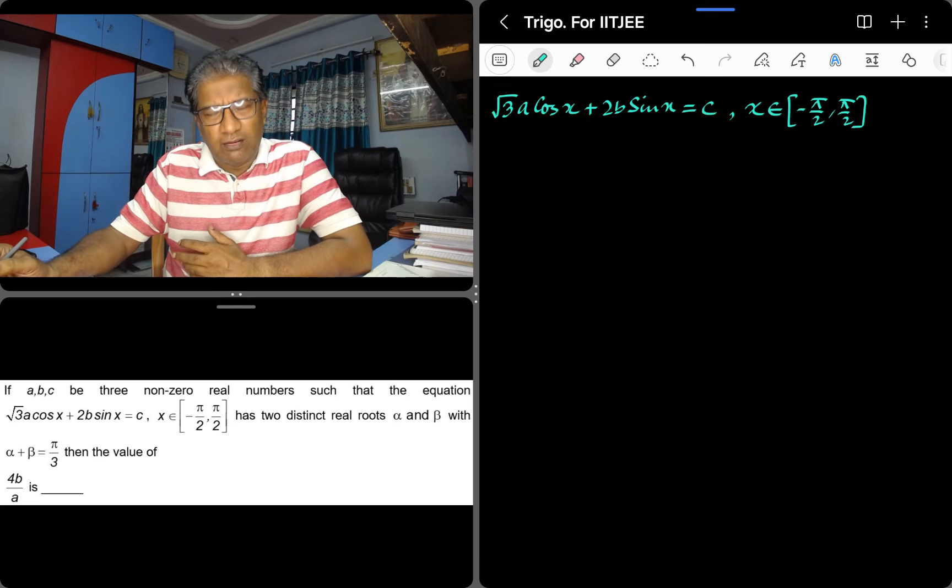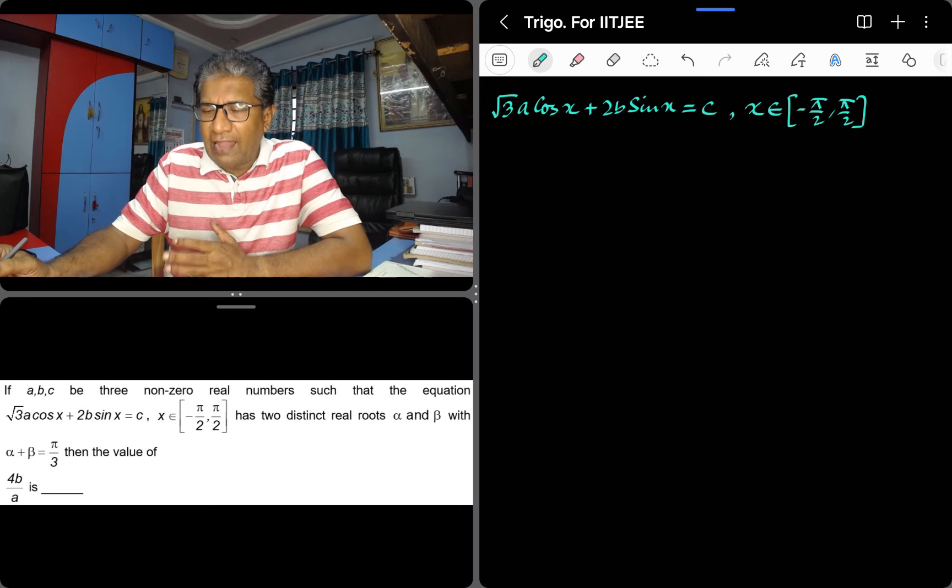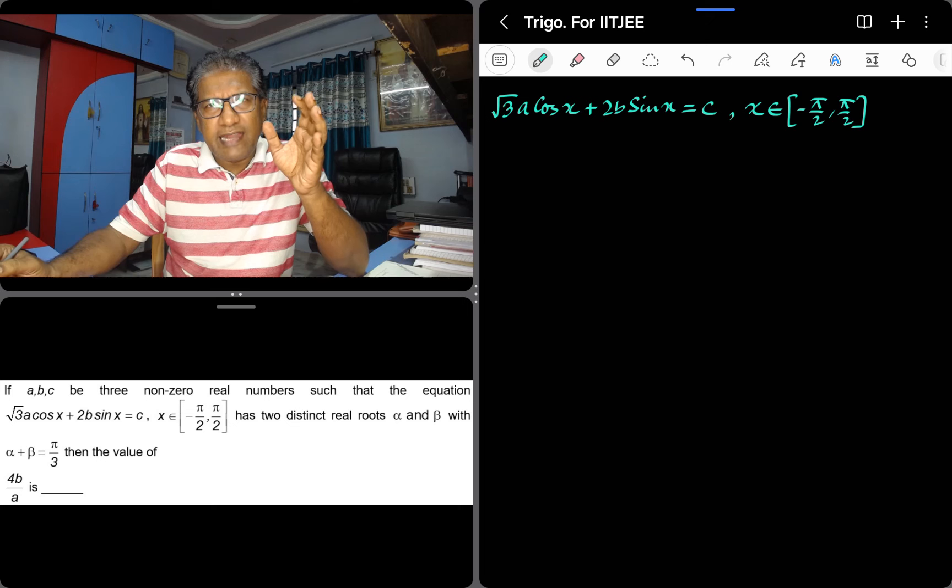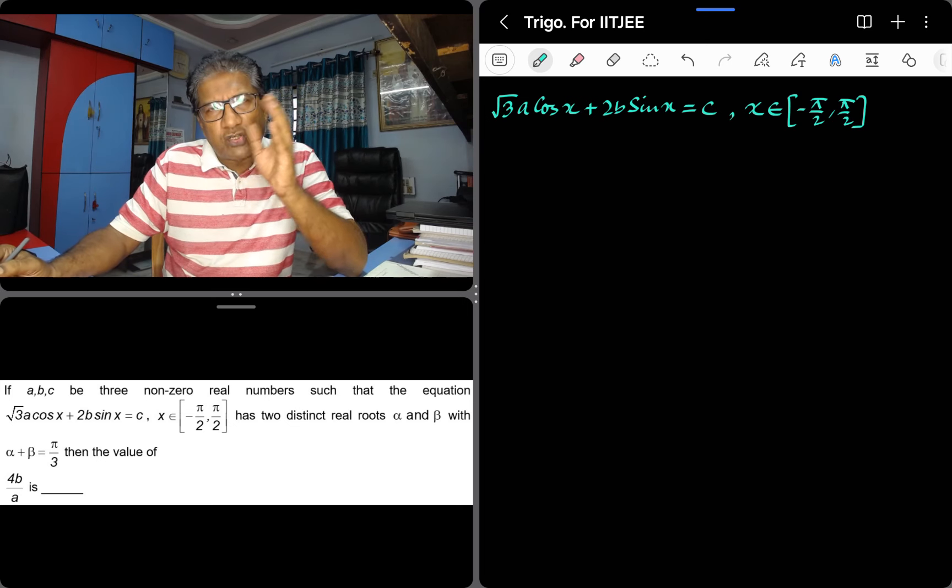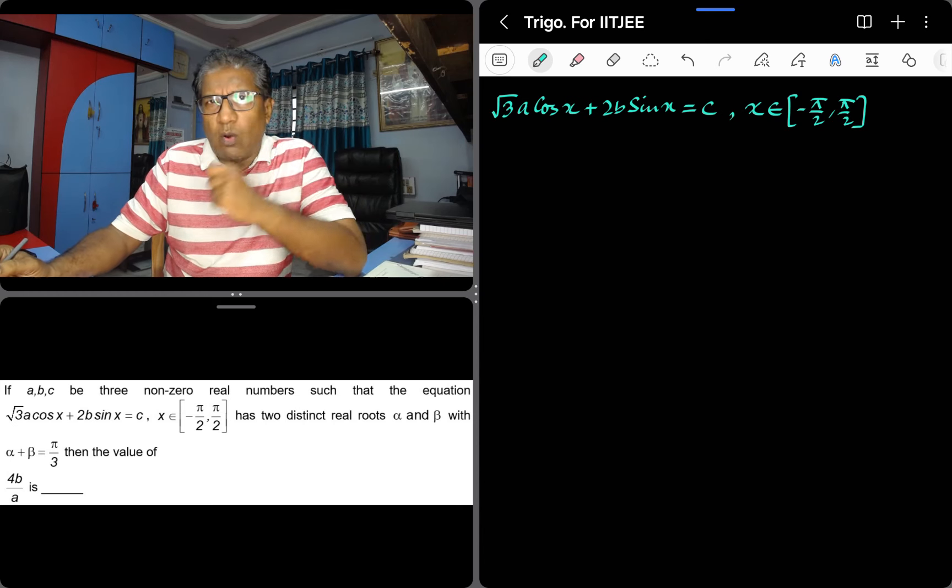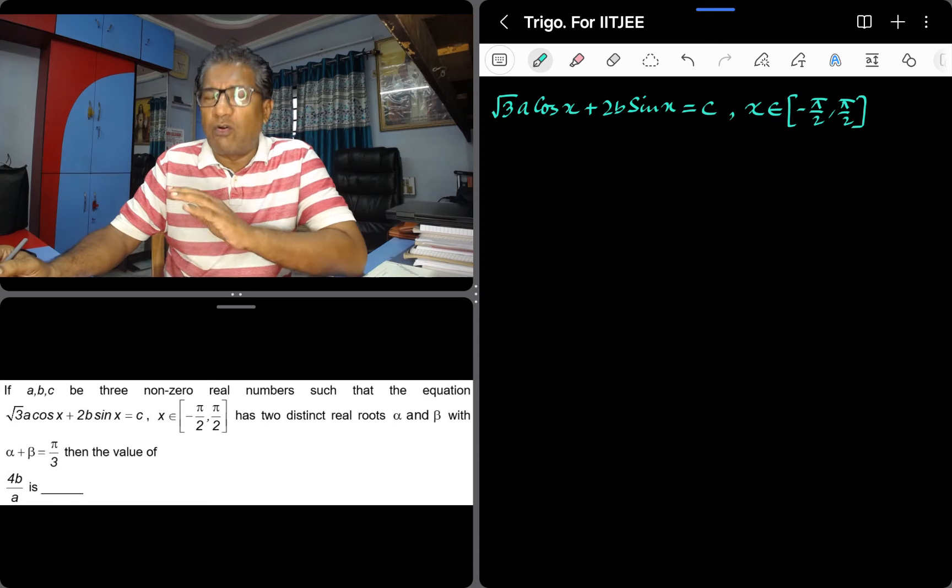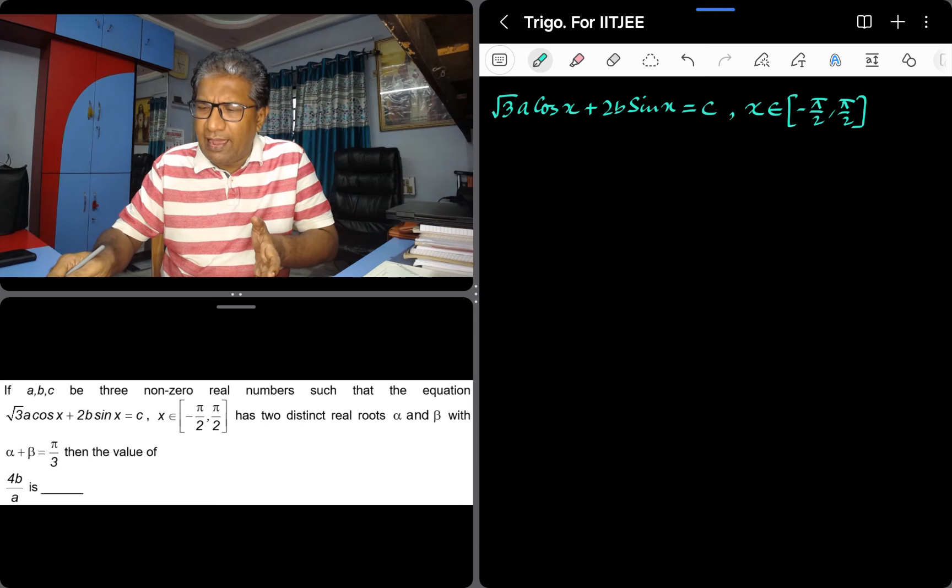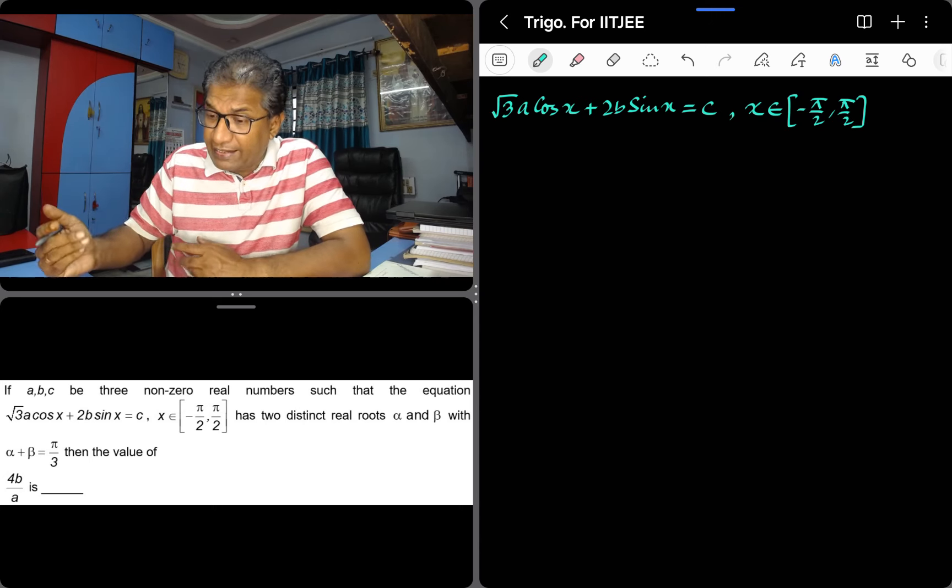Since the question involves two roots like alpha and beta, we can understand it easily that this equation has to be transformed into a quadratic equation. Otherwise how will we get two roots and how can we utilize that? So this is why we will transform it into a quadratic equation.